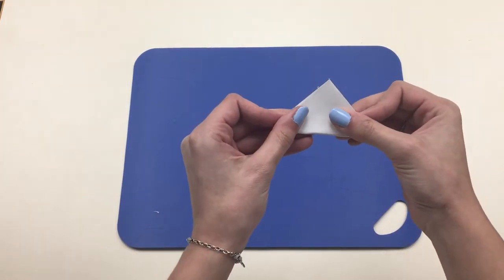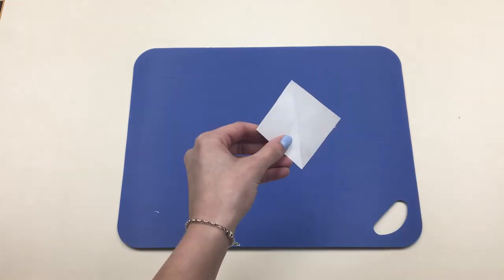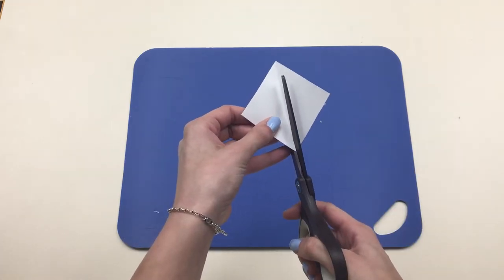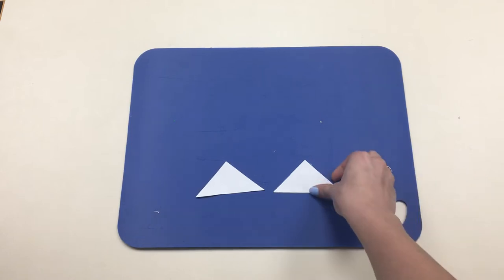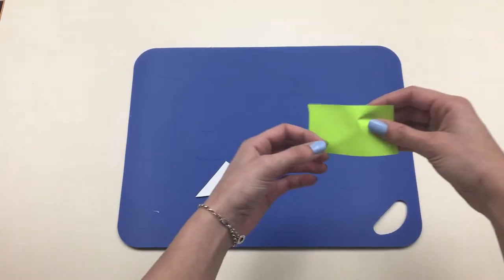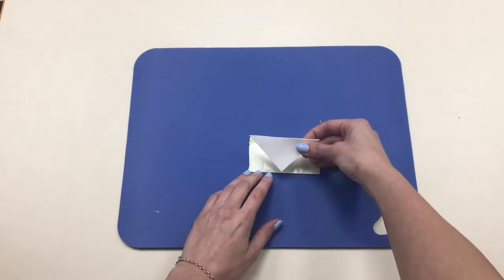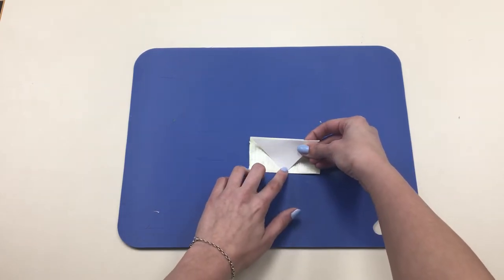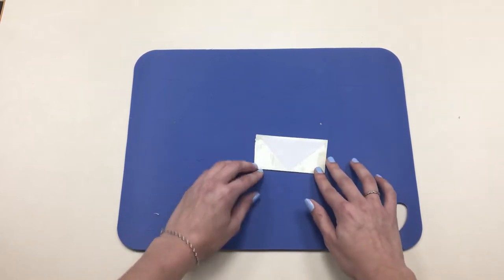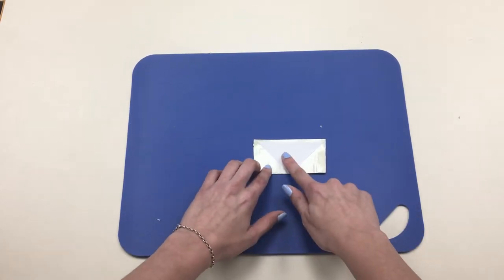Fold your square diagonally from corner to corner. Cut along the folded line. With the triangle you made, cut a piece of tape. Put the tip of the triangle in the center of the tape. Fold over the top edge of the duct tape.